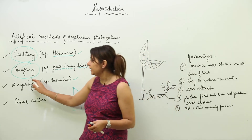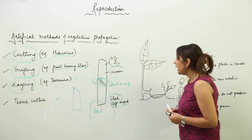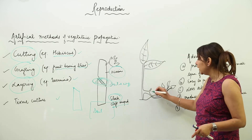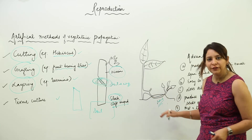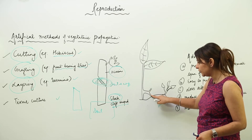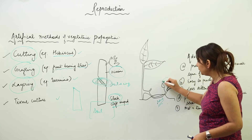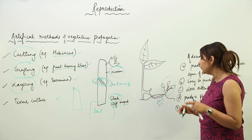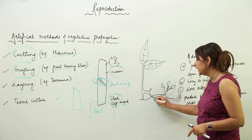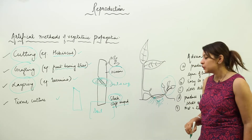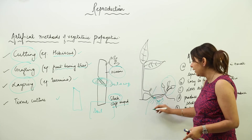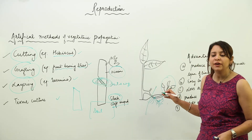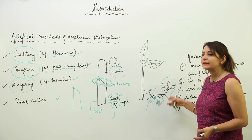The third method is layering, which happens in Jasmine, for example. We take a lateral branch of a plant and bury it in the soil — some part is above the soil, much of it is below, and the upper end is left free. We cover it with soil and water it, providing everything the plant needs. In a span of time, the buried branch region develops roots.